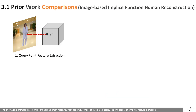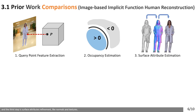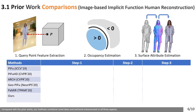Prior works on image-based implicit function human reconstruction generally have three main steps: query-point feature extraction, dense occupancy field estimation, and surface attribute refinement such as normals and textures. Compared with prior works, our method contributes novel ideas and technical enhancements in all three aspects.